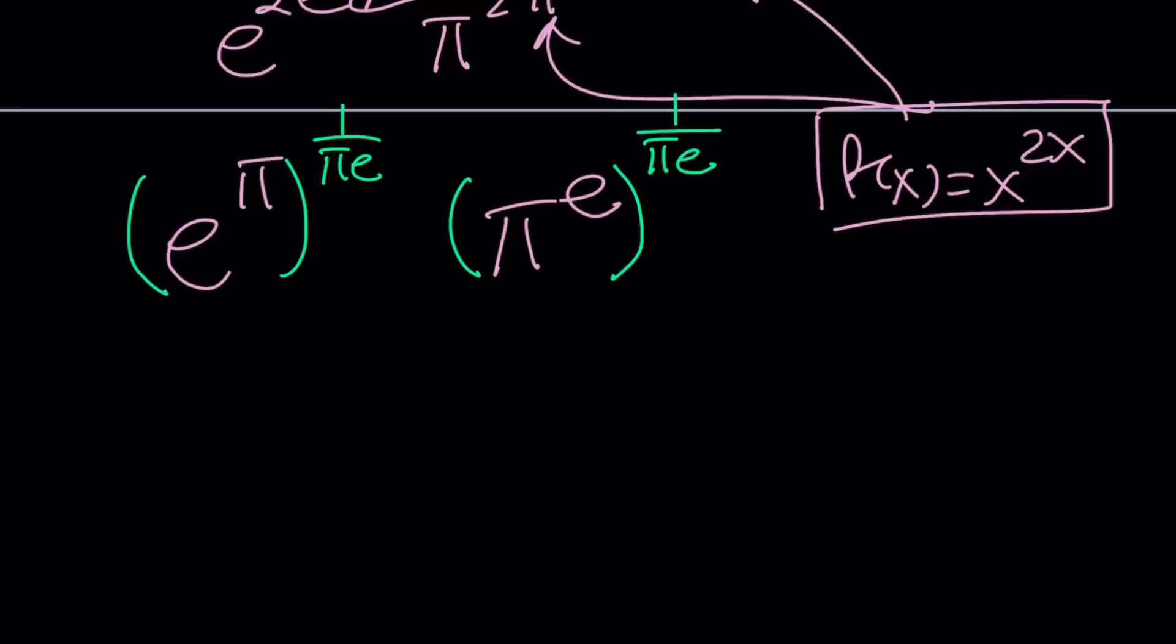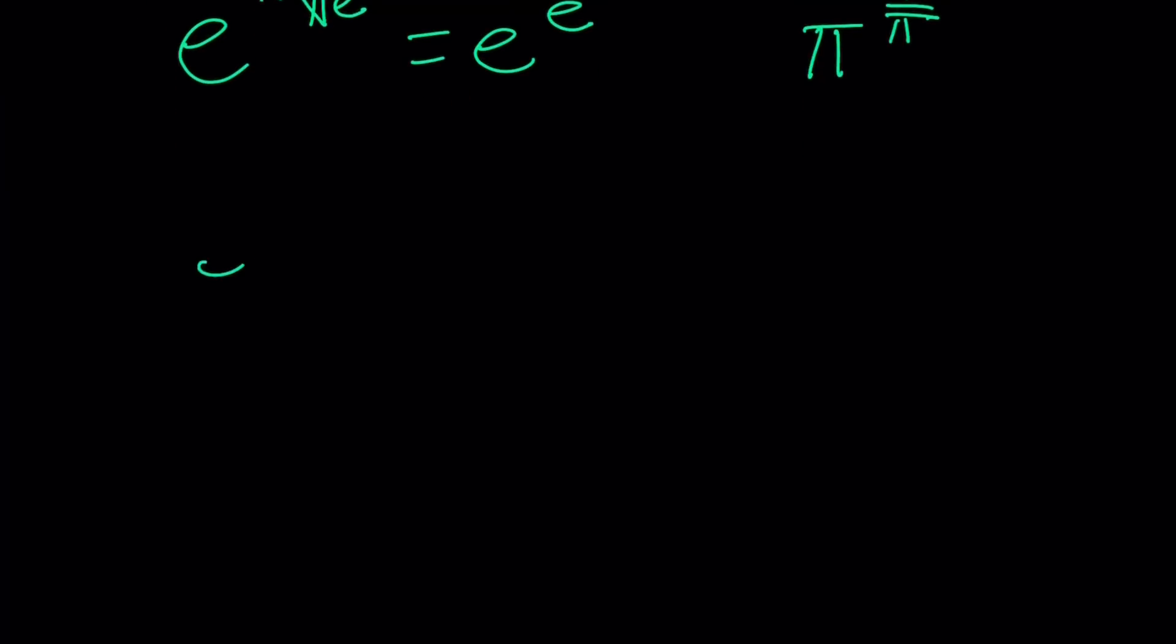So when you do this, obviously, you're going to get e to the power π times 1 over πe. π is going to cancel out and you're going to end up with e to the power 1 over e. Yes, that's what I was trying to get. I only want e's. I don't want any π's mixed with e's. And here, the e is going to cancel out. We're going to get π to the power 1 over π.